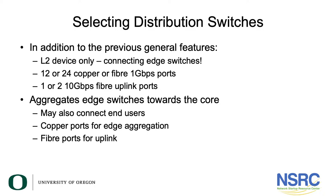12 or 24 copper ports are usually sufficient — consider how many edge switches you have in the building that you're trying to connect to the distribution switch. If you have decided to use fiber to connect edge into the distribution, look for a switch with fiber ports, specifically one or two 10 gig fiber uplink ports. You may start with a single 10 gig and then later bond the two together to give you 20 gig capability to the core.